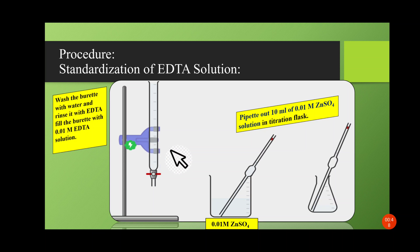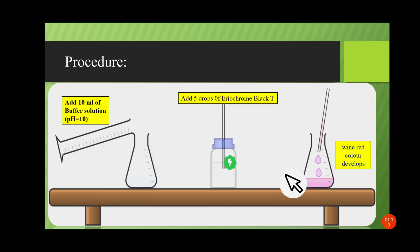Procedure for the standardization of EDTA solution: first, find out the exact molarity of the EDTA solution. Wash the burette with distilled water and rinse it with EDTA solution. Fill the burette up to the mark with 0.1 molar EDTA solution. Then pipette out 10 ml of 0.1 molar zinc sulfate solution into a titration flask. Add 10 ml of buffer solution of pH 10 into the zinc sulfate solution, then add 5 drops of Eriochrome Black T indicator.